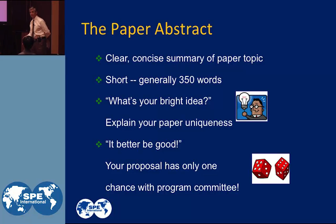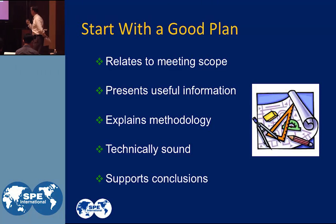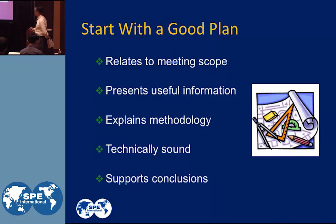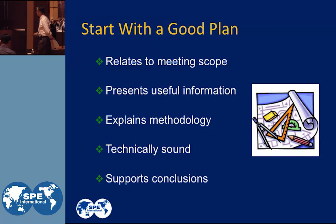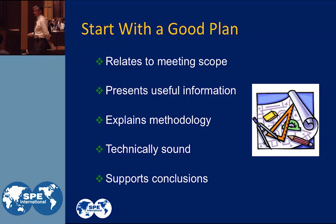It's like taking a roll of the dice. So how do you get a good abstract? You start with a good plan. First of all, it's got to relate to the meeting scope, the meeting topic. It's got to present useful information — you've got to glean that out of your abstract. It's like a paragraph. You have to write about the whole topic of your paper and how it benefits and improves the knowledge base of the society.